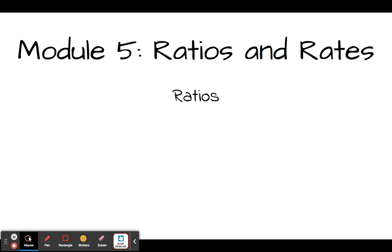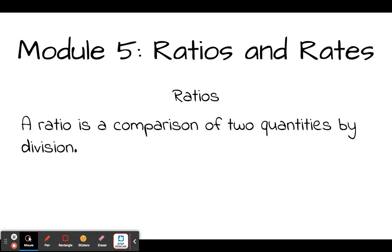Okay, so ratios. What is a ratio? Well, a ratio is a comparison of two quantities by division. So a comparison of two quantities, like two different things. So this would be like apples and oranges or cats and dogs or flour and sugar, right? Two different quantities and we're going to compare them using division.